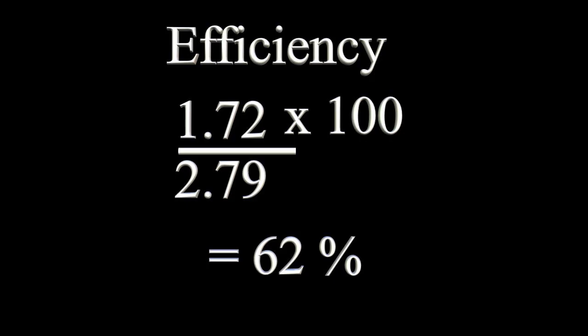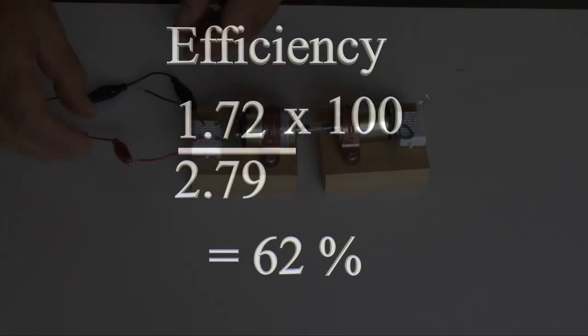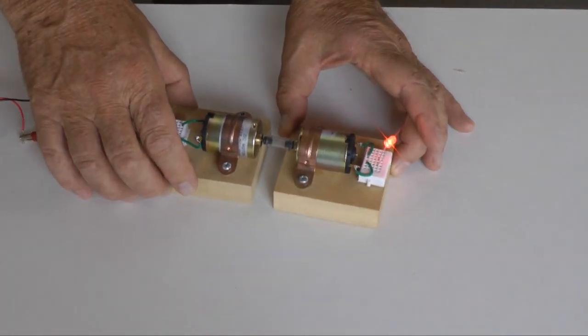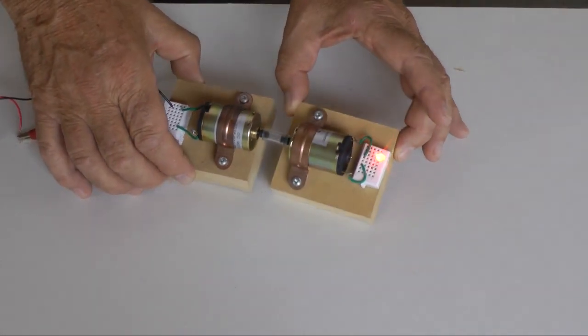This means for every watt of power put into the system, we only get 0.62 of a watt out. This inefficiency largely comes from mechanical friction and electrical resistance.